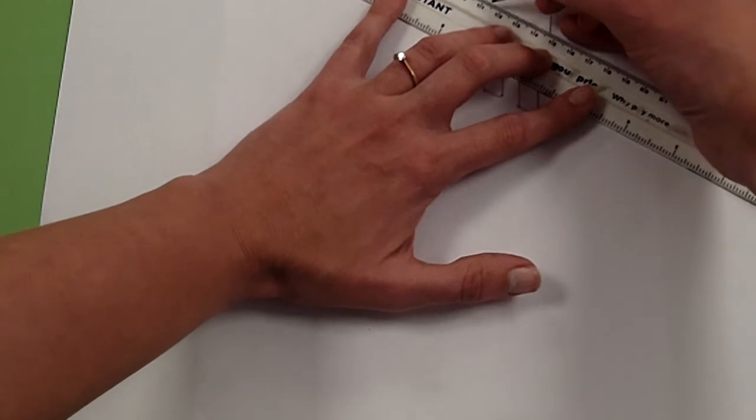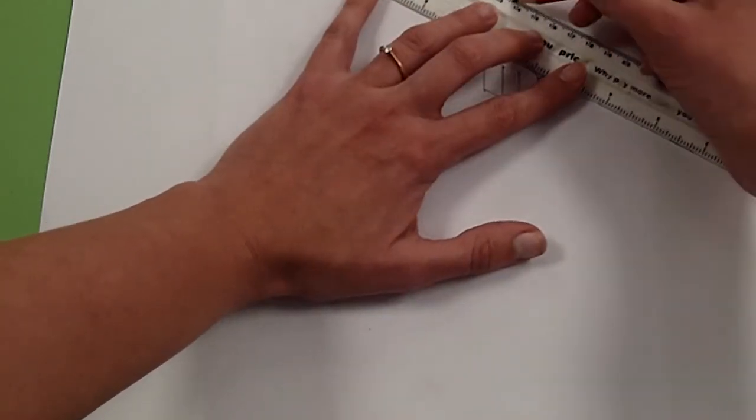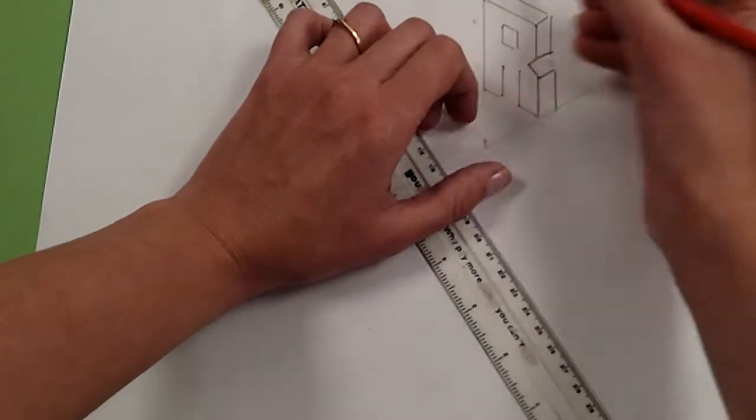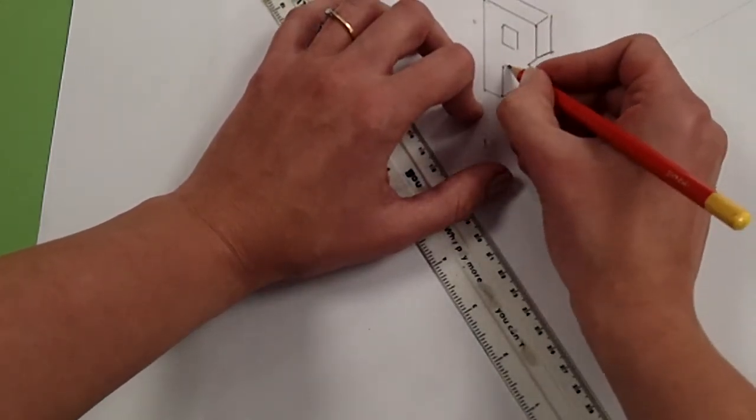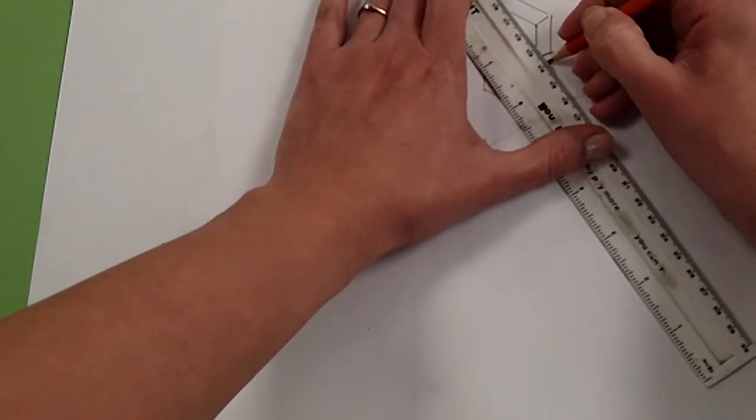And then on that one across like that, up there and across, and across. And again I can neaten these off as I go along.